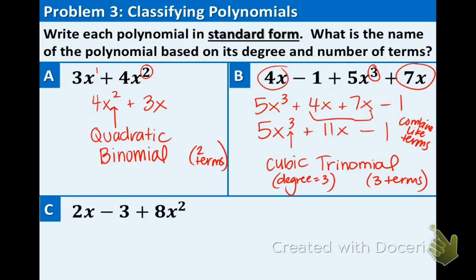The last one, 2x minus 3 plus 8x squared. The 2 is the biggest degree, so we're going to have 8x squared first, then the little one, that's obviously the next one in line, so plus 2x, and you don't need the 1 up there, just put it there to help us. And lastly, minus 3. So that's in standard form now.